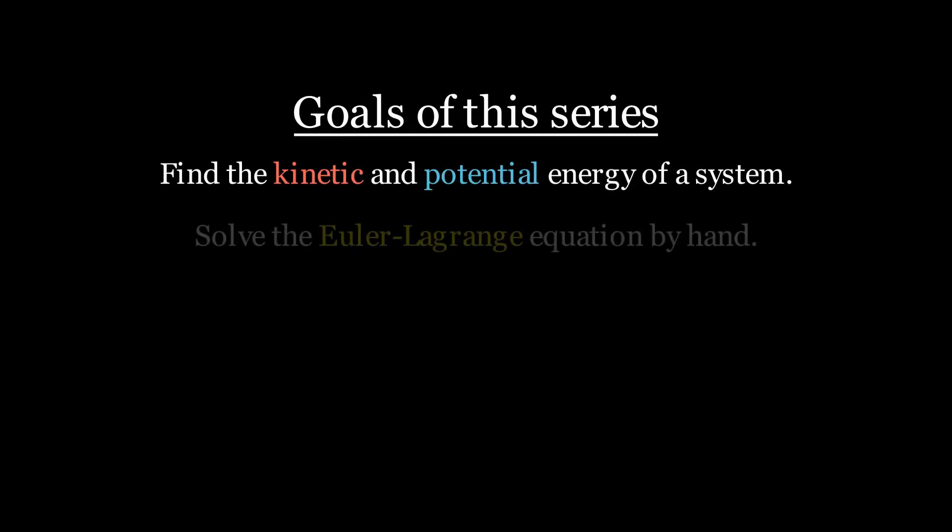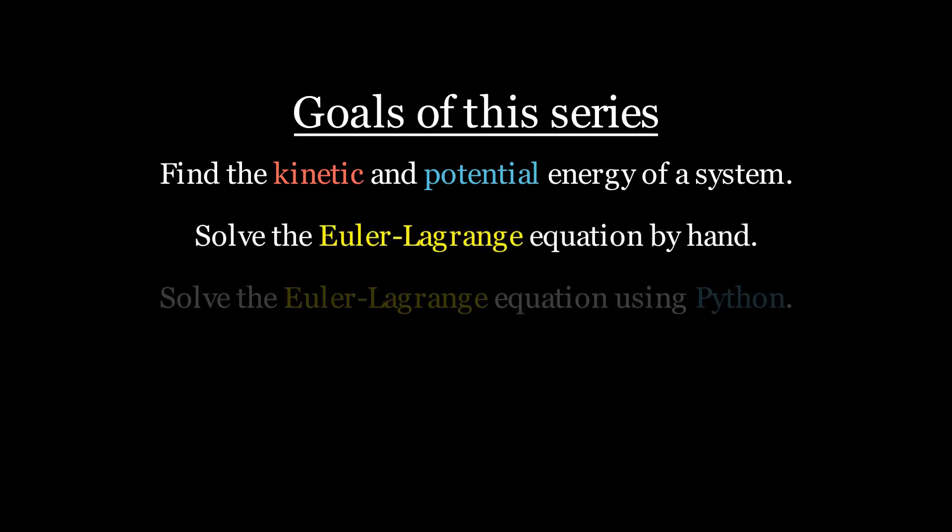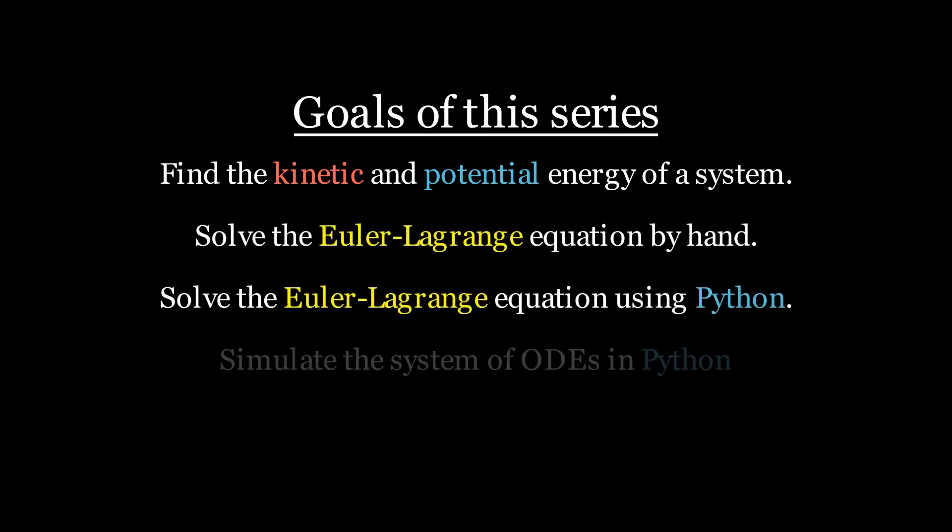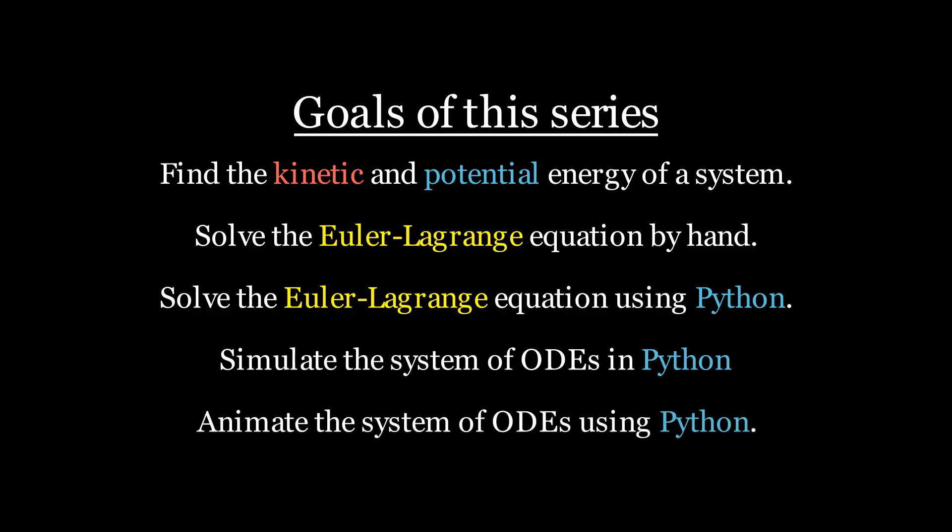By the end of the series you will know how to find the kinetic and potential energy of a system. You'll learn how to solve the Euler Lagrange equation by hand and with Python. You'll also learn how to simulate a system of ODEs in Python and create a basic animation.